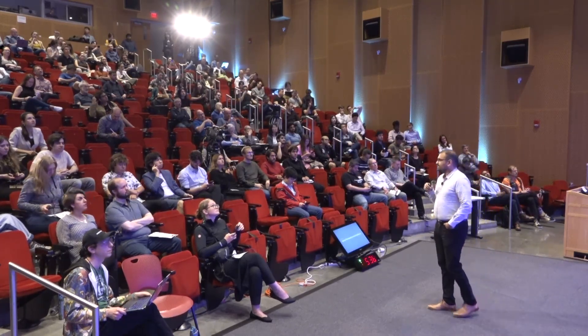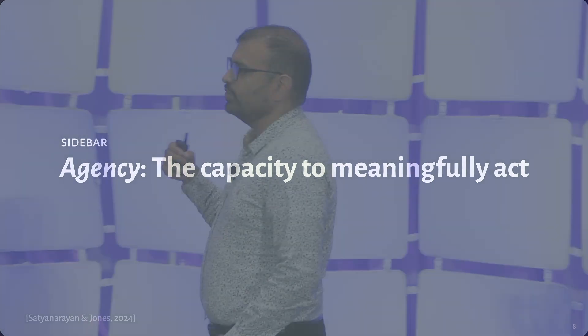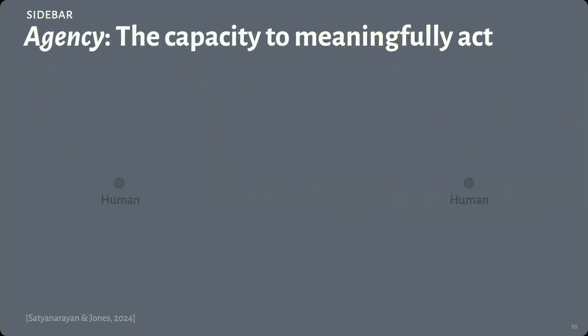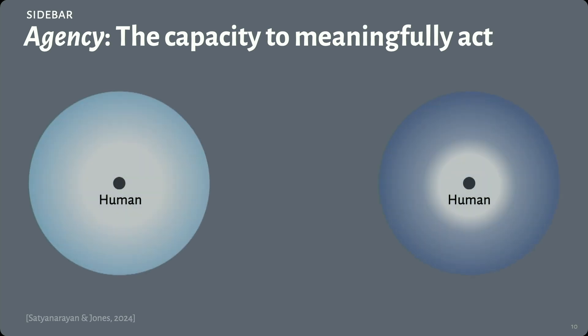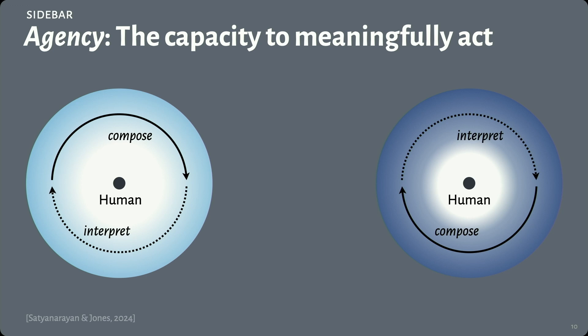What's an alternate to the Turing test that we might think about? Well, recently in collaboration with my colleague Graham Jones in anthropology, we've thought about what a renewed focus around agency might look like. By agency, we mean the capacity to meaningfully act, and by meaningful, we mean the degree to which an action advances an agent's goal. If we imagine ourselves as individual people out in the world, we assert our agencies in two ways: composing different kinds of operations to produce an action, and then interpreting the effect that action has on the world.